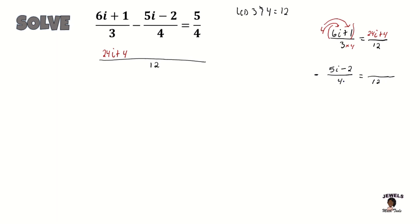We know that 4 times 3 equals 12, so the entire numerator will also be multiplied by 3, and I'm going to use this minus sign with the 3 as well. So negative 3 times 5i equals negative 15i, and negative 3 times negative 2 equals positive 6. So we're substituting back: negative 15i plus 6.